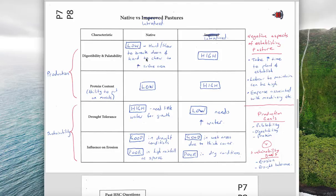With native they're low in digestibility and palatability, hard to chew, and low in protein content. However they're very good at drought tolerance - very high drought tolerance and little need for water. They have a good influence on erosion in drought conditions because they stay and live, but they're poor in high rainfall areas because they're quite spread out and sparse.